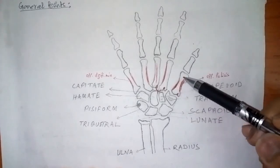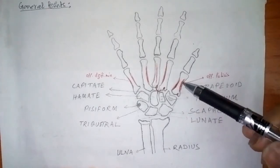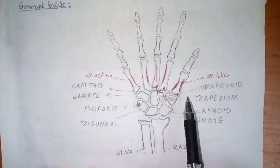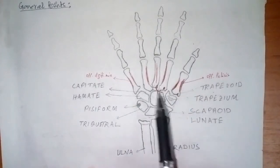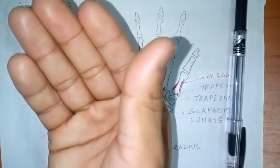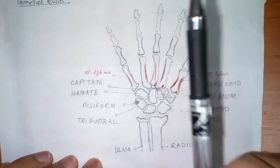The first metacarpal bone lies more anteriorly than the other metacarpal bones. It is rotated medially through 90 degrees, so that it lies in the anterior position and can oppose the remaining fingers. The opposition of the thumb is provided by this 90-degree rotation. As you can see here, this metacarpal bone has already rotated anteriorly to 90 degrees so that it can oppose the fingers — that is a very important point.